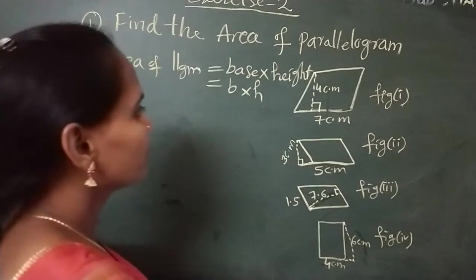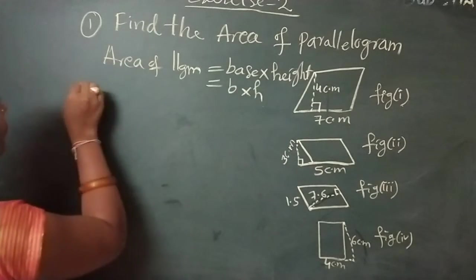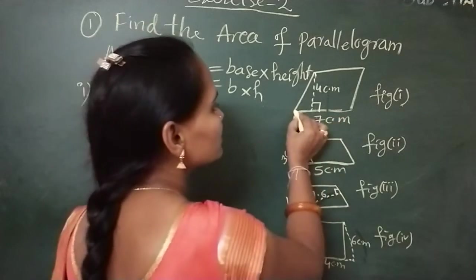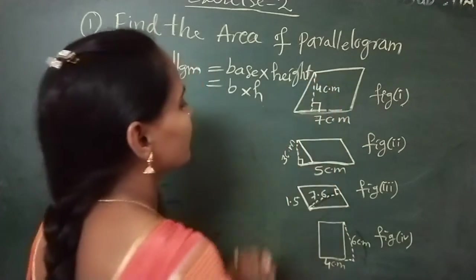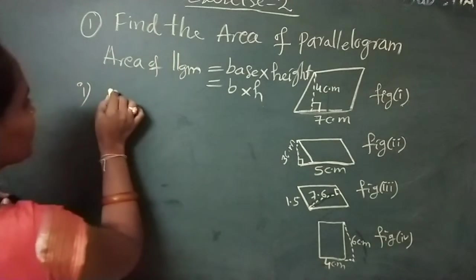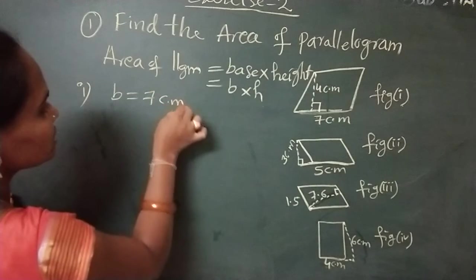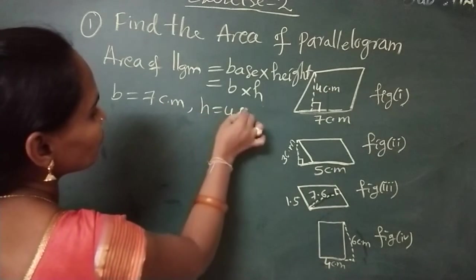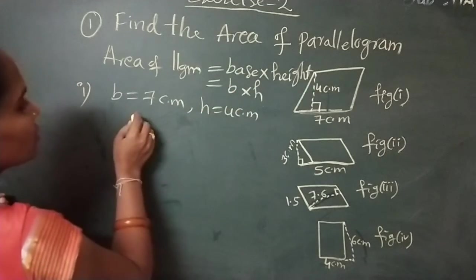See the first figure. Here figure 1 is given - this is the base of the parallelogram and this is the height of the parallelogram. Now, here from figure 1, base is equal to 7 centimeters and height is equal to 4 centimeters.